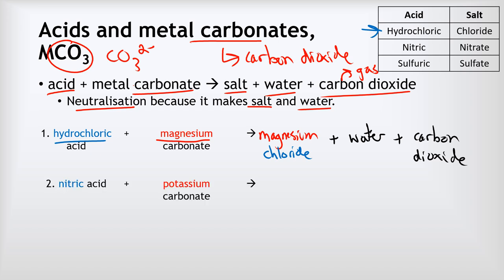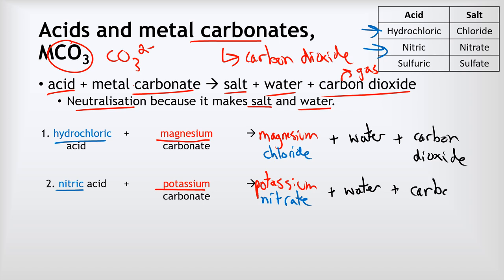Example two: nitric acid reacting with potassium carbonate. The base gives us the cation — potassium — so our salt will be potassium something. We look at the acid for that: nitric acid produces nitrate salts, so this will be potassium nitrate. We're also making water because it's a neutralization reaction, and we're also making carbon dioxide because our base was a carbonate.